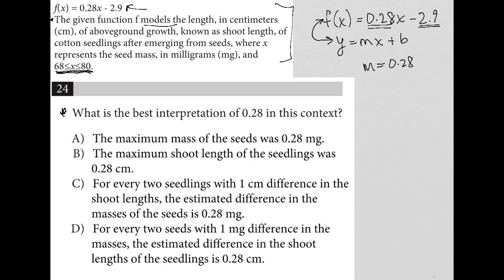So 0.28 must be the slope. So 0.28 centimeters per probably milligram I would imagine, and then b represents my y intercept which is the negative 2.9, which makes sense because the seed starts underground, so underground by 2.9 centimeters. So we want the interpretation of 0.28. I basically just described that as being the slope and having something to do with the rate of growth. So let's see which answer choice matches that.